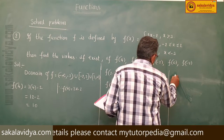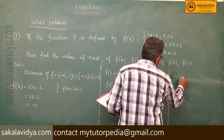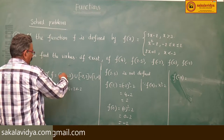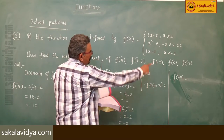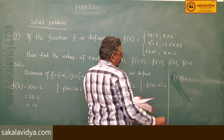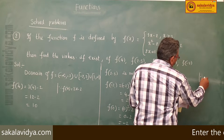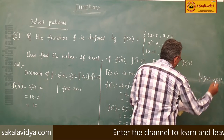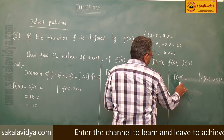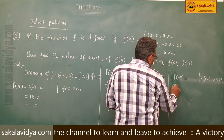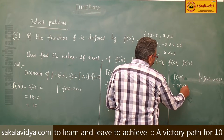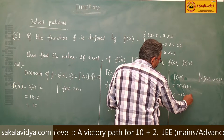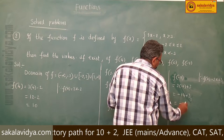Now f(−7). The value −7 falls in the interval x < −3, where f(x) = 2x + 3. So f(−7) = 2(−7) + 3 = −14 + 3 = −11.